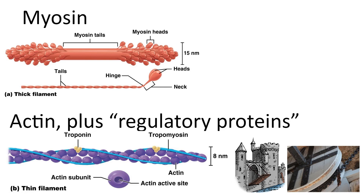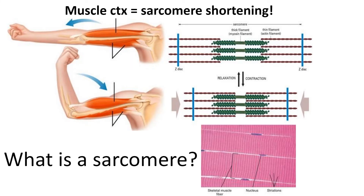This contraction is regulated by the availability of the active site on the actin filament. Two regulatory proteins control active site availability: tropomyosin is a protein that can move in front of the active site to shut it off, and troponin is the protein that moves tropomyosin in and out of the active site location. You can imagine this like a drawbridge on a castle — the bridge is tropomyosin and the wheel to open or close the bridge would be troponin.